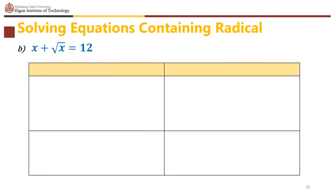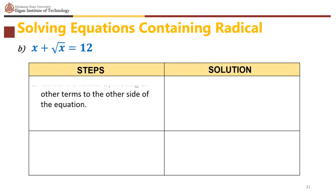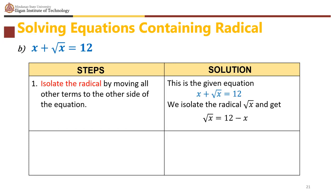For the equation x plus square root of x equals 12: isolate the radical term. Move x to the right side so that square root of x equals 12 minus x. The index is 2, so square both sides.